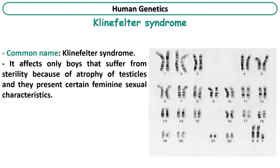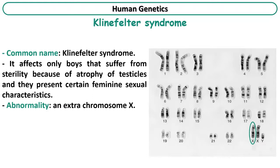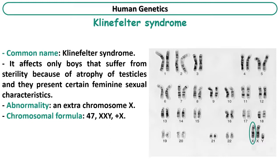What about Klinefelter syndrome? It affects only boys who suffer from sterility because of atrophy of testicles, and they present certain feminine sexual characteristics. If we examine the karyotype, we find two chromosomes X and one chromosome Y instead of one X and one Y, which means the abnormality is an extra chromosome X. The chromosomal formula will be 47, XXY, and this is a gonosomal abnormality.